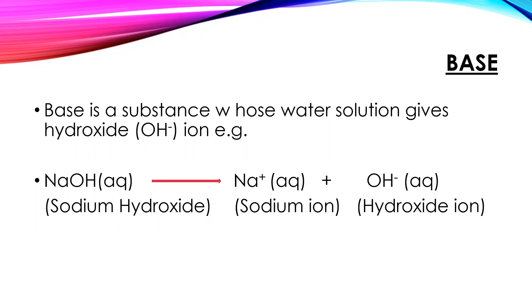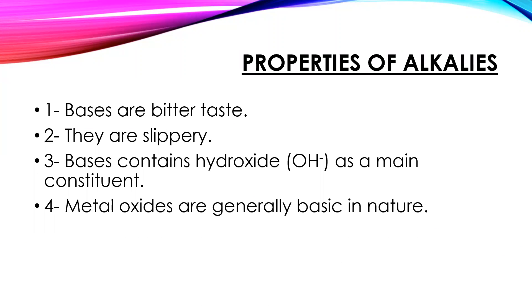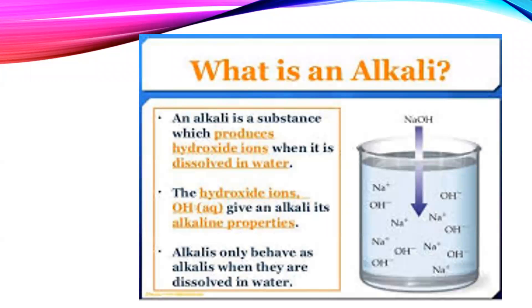Base is a substance whose water solution gives hydroxide (OH⁻) ions. Example: sodium hydroxide converts into sodium ion plus hydroxide ion. Properties of alkalies: Bases have a bitter taste; they are slippery. Bases contain hydroxide (OH⁻) as a main constituent. Metal oxides are generally basic in nature. An alkali is a substance which produces hydroxide ions when dissolved in water; alkalies only behave as alkalies when dissolved in water.